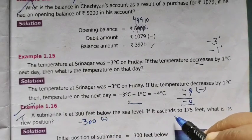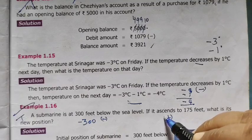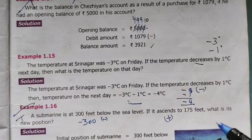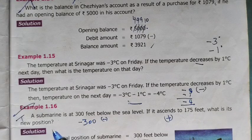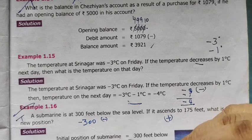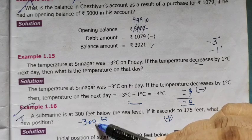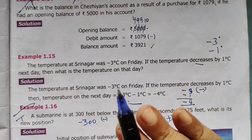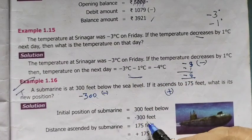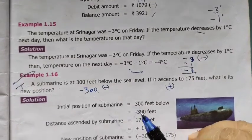If it ascends, ascends means plus, Malabarad. To 175 feet. So plus 175. What is the new position? First, below the level in the 300 feet. Then again it ascends. So 175. Just you are subtracting that's all. So minus 300 plus 175.